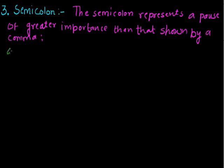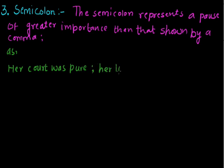For example, in this sentence: 'Her coat was pure; her life.' Here, 'her coat was pure' is the first part of the sentence and 'her life' is the second part. But we have to give importance to the next part also, so we have used the semicolon after the first sentence.